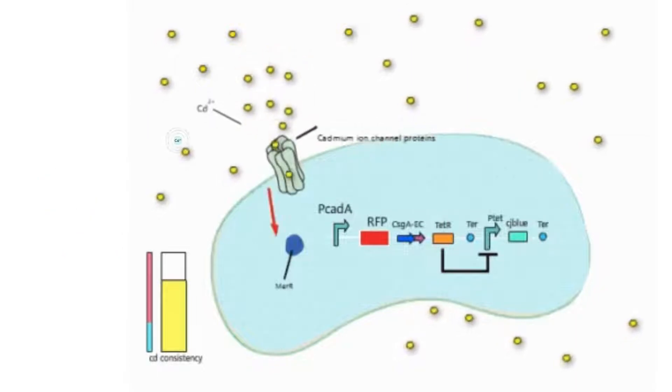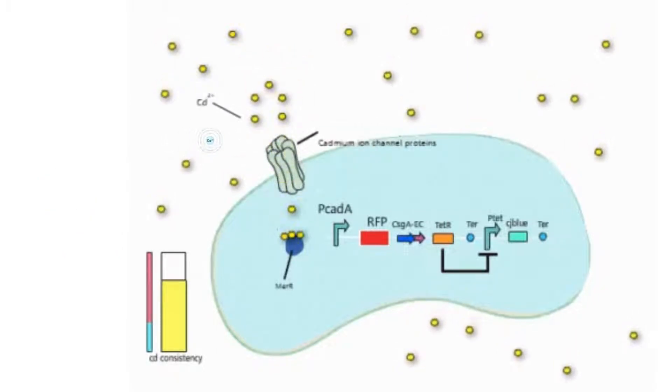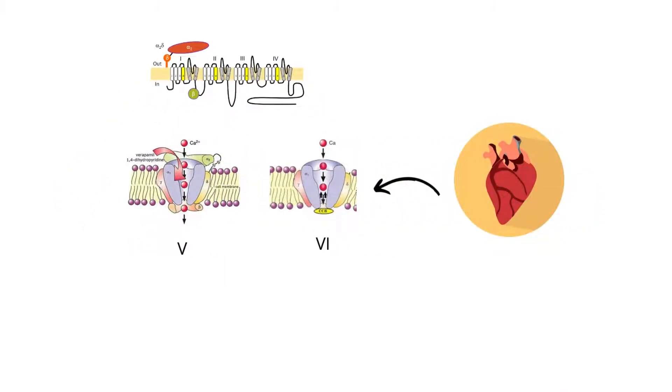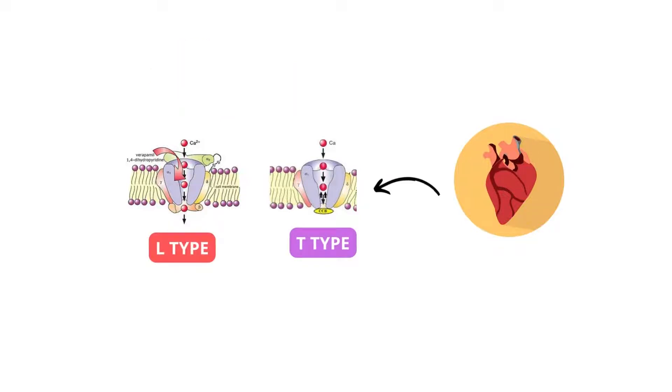These calcium ions enter the cytoplasm and organelles through calcium channels. There are mainly six types of calcium channels, of which only two are prominent in the heart. In cardiac tissues, the two types of calcium channels are the L-type and the T-type.